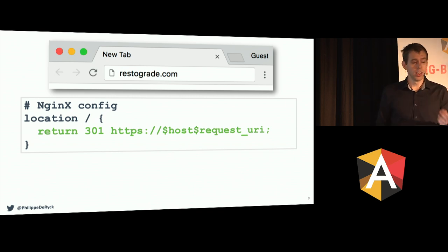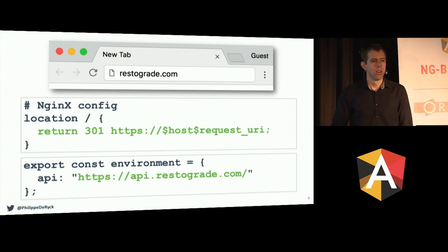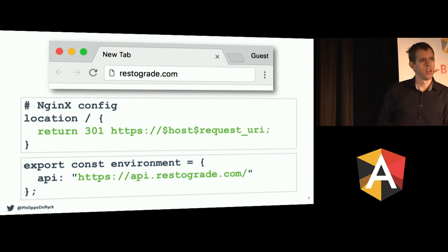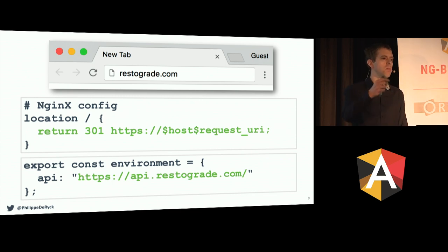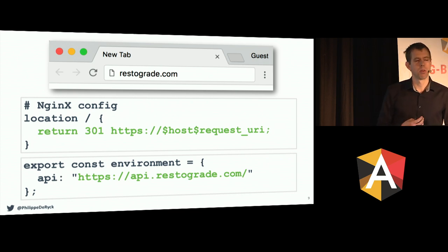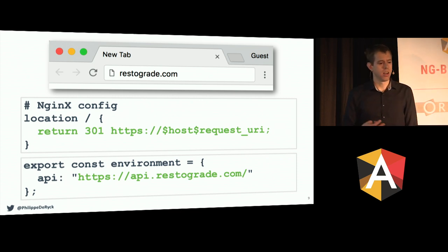There is a caveat. This matters for browser-based traffic, where you have an HTTP request first. If you're using an API, you don't need this redirect mechanism — your API will be contacted over HTTPS directly. Whenever you're deploying an API on an endpoint that doesn't host front-end resources, you can actually disable HTTP altogether. You don't need to support the redirect mechanism. That's something you might want to consider to improve security and simplify your deployment.